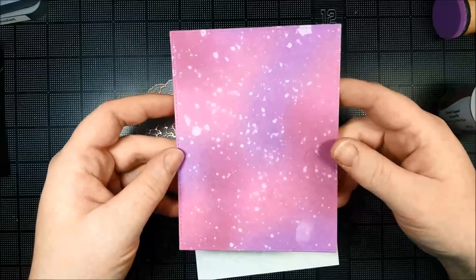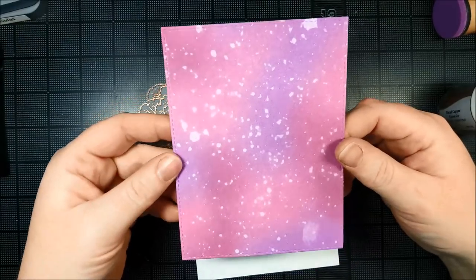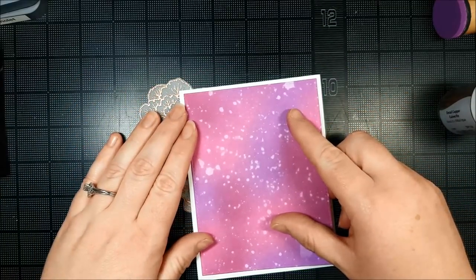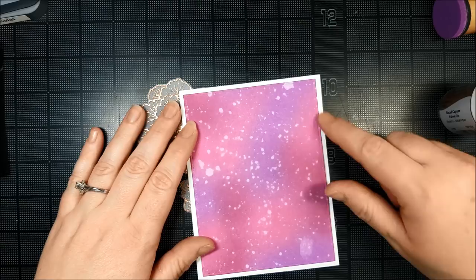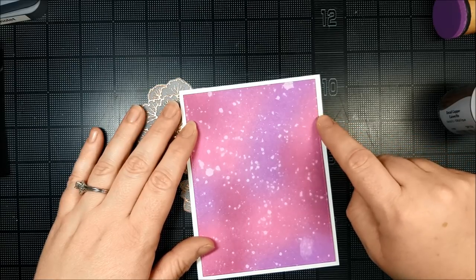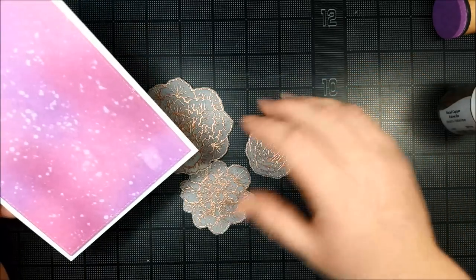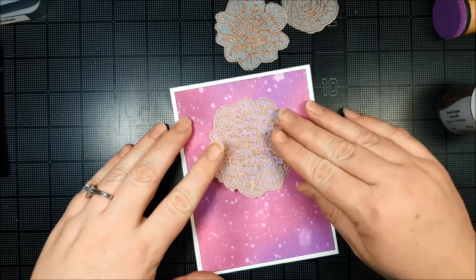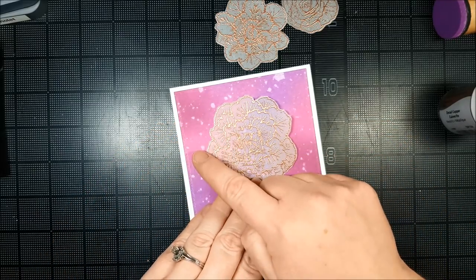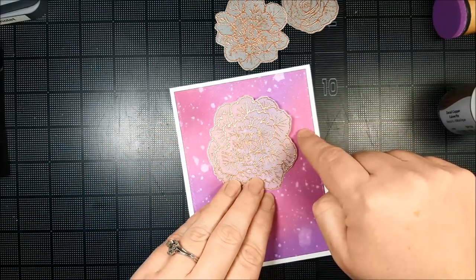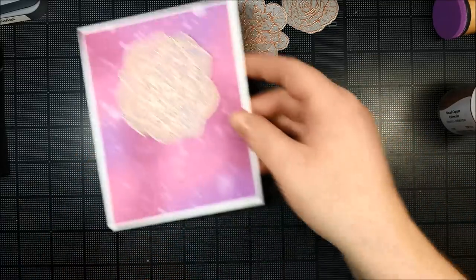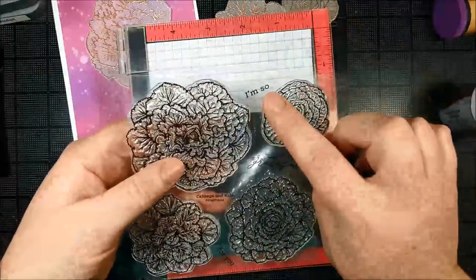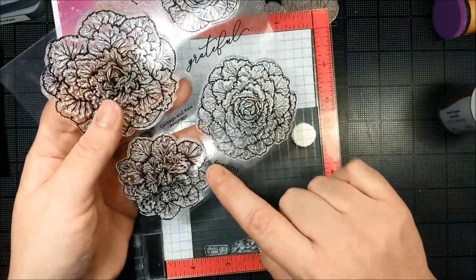I have fussy cut out my cabbages and kales. I've got a top folding A2 size card ready to go. And I also die cut my distress ink panel with just a stitched edge die. I wanted a white outline around that panel to set it off. I'm going to use my large cabbage image and then we're going to stamp a greeting to go across it. So I've got the greeting from the same stamp set. I am so grateful for you.